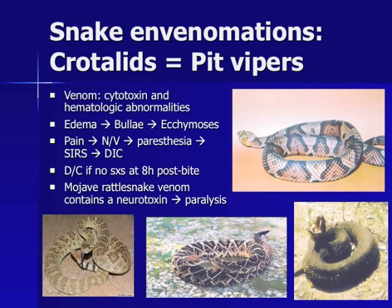Crotalid venom causes local skin necrosis and hematologic abnormalities. Initial edema is followed by bullae formation and ecchymosis. The first symptoms are pain, followed by constitutional symptoms such as nausea and vomiting, paresthesias, and eventually systemic inflammatory response syndrome and DIC. Crotalid venom acts early, so if patients lack symptoms within 8 hours of the bite, no pathologic effects are likely to occur. The Mojave rattlesnake is an exception in that its venom contains a neurotoxin which can cause paralysis.